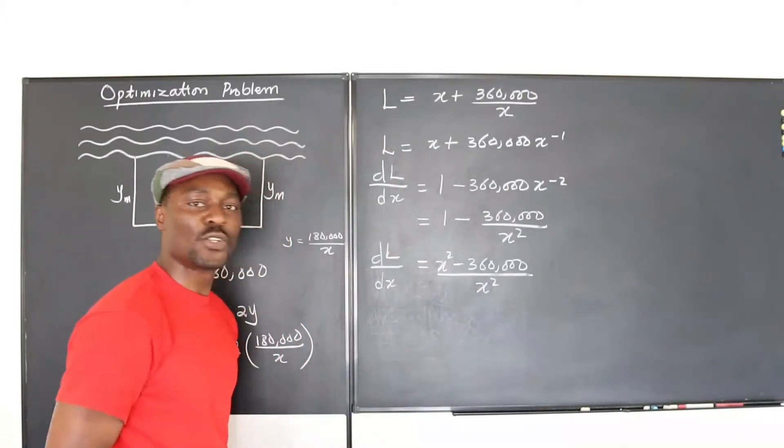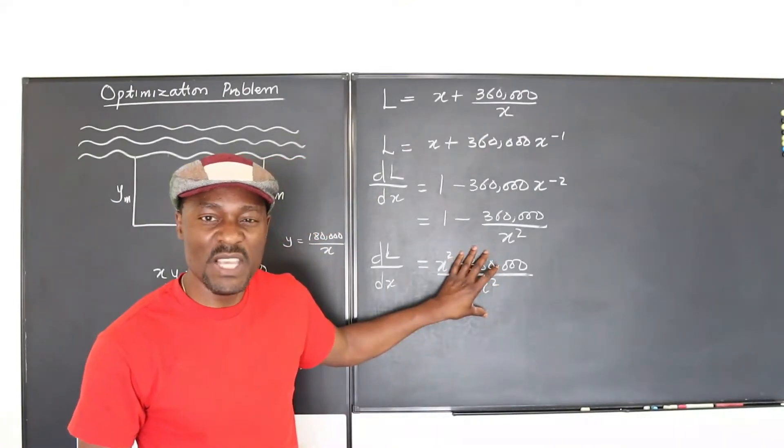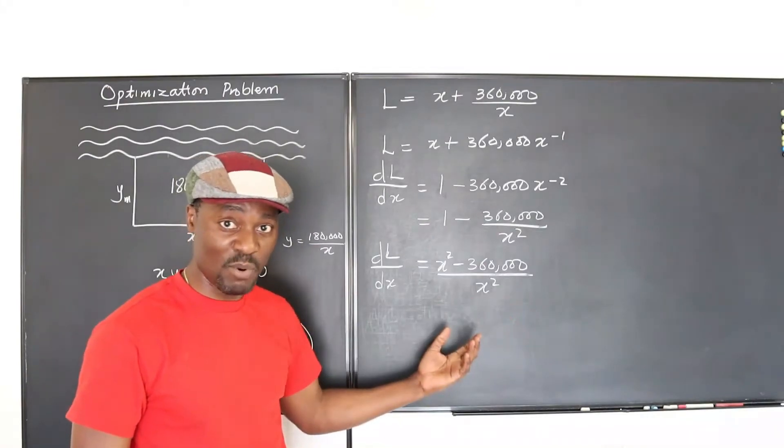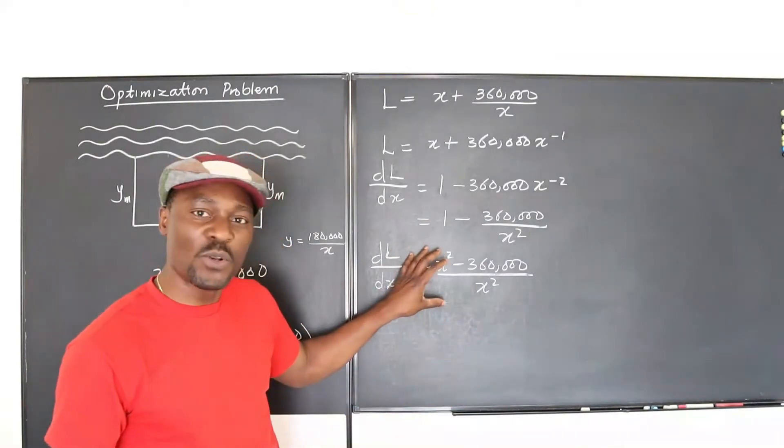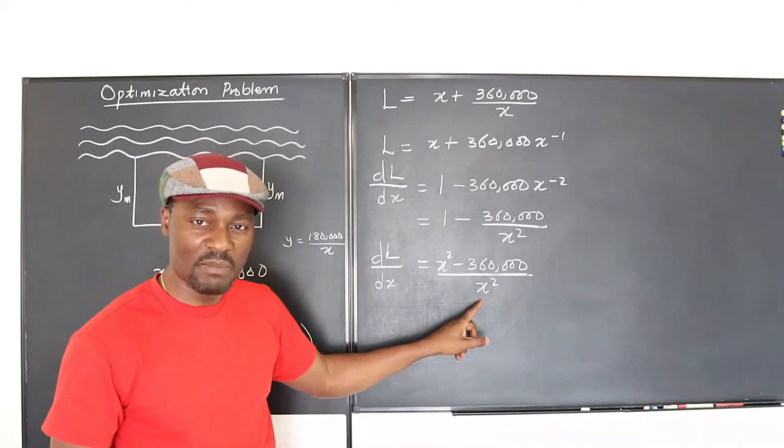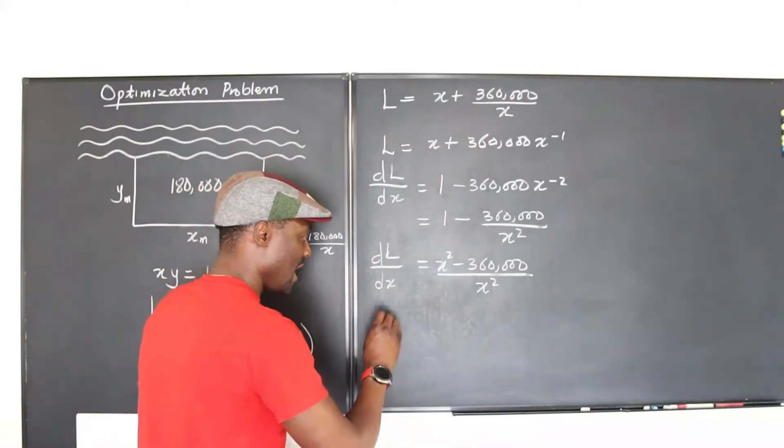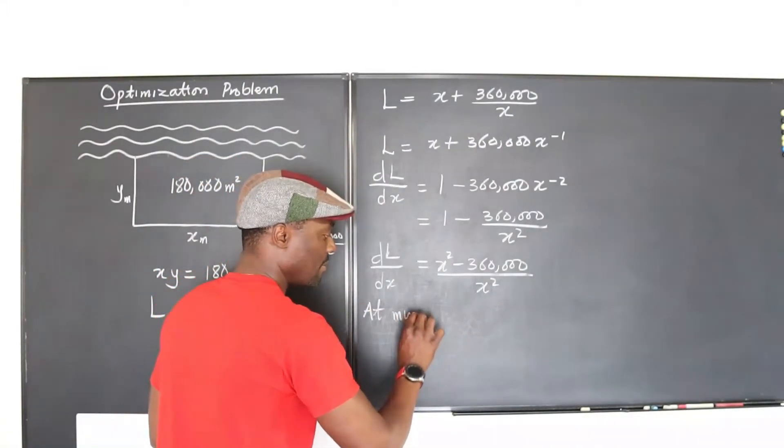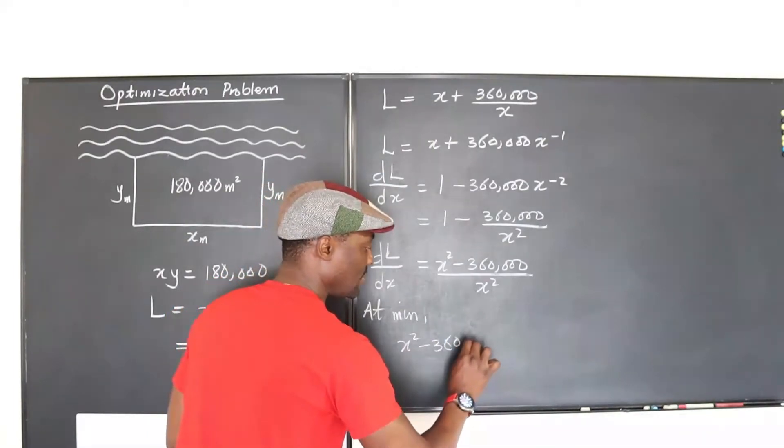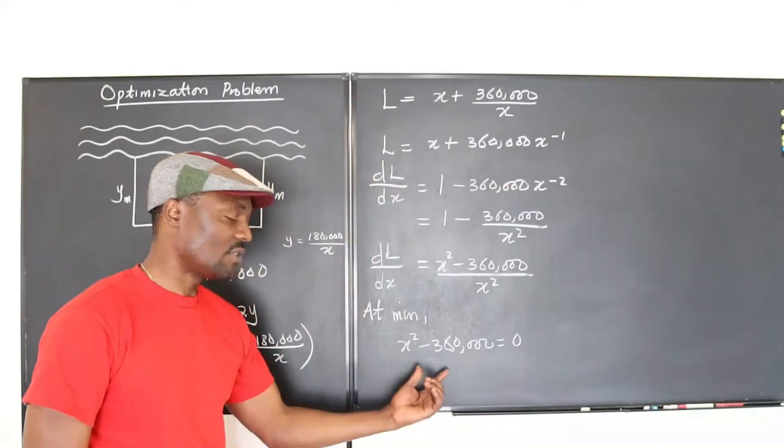Okay, so what should we do with this? It's very simple. When is a rational expression equal to zero? Remember, this is equal to zero. Well, this is only equal to zero when the numerator is equal to zero, not the denominator. So the only thing that's relevant at this point is we say at minimum, x squared minus 360,000 will be equal to zero, and then we can solve this.